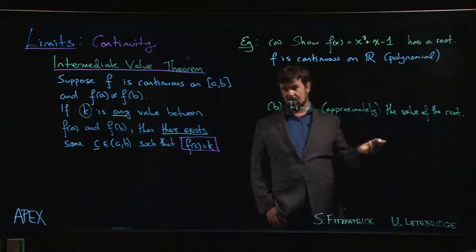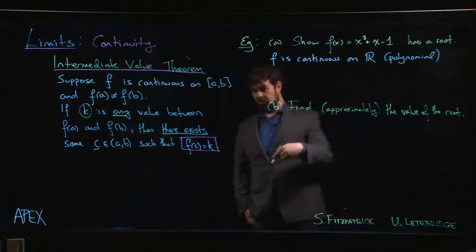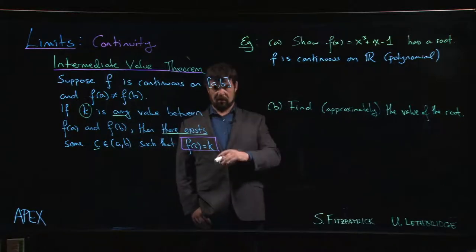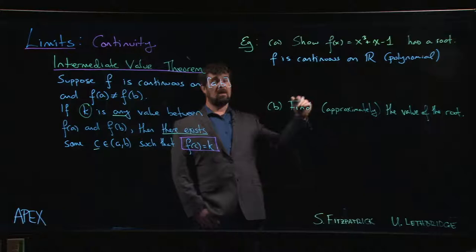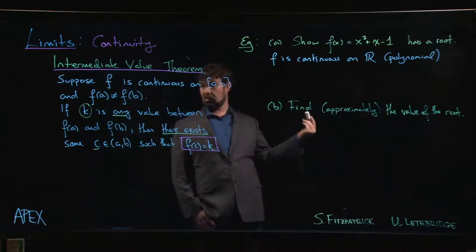And if you want you can give that argument. You could say, well look, the limit as x goes to infinity is plus infinity, the limit as x goes to minus infinity is minus infinity. So it has to be negative somewhere, has to be positive somewhere, so it has to be zero somewhere in between because of the intermediate value theorem.